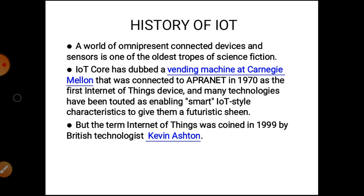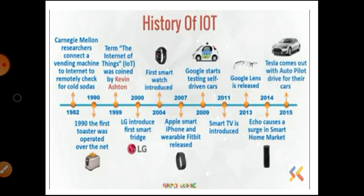Next, history of IoT. A world of omnipresent connected devices and sensors is one of the oldest tropes of science fiction. IoT's core has roots in a vending machine at Carnegie Mellon that was connected to the internet in 1970 as the first Internet of Things device, and many technologies have been tested and embedded in smart IoT-style characteristics. The term Internet of Things was coined in 1999 by British technologist Kevin Ashton.